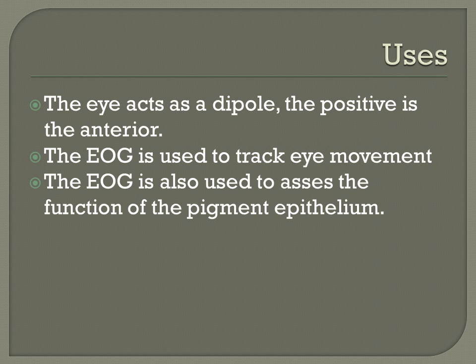The uses of the EOG: with the eye, it acts as a dipole. The positive end is the anterior, the negative is the posterior. The EOG is used to track eye movements, such as that in computers, especially for paraplegics — like Stephen Hawking could use one of these.